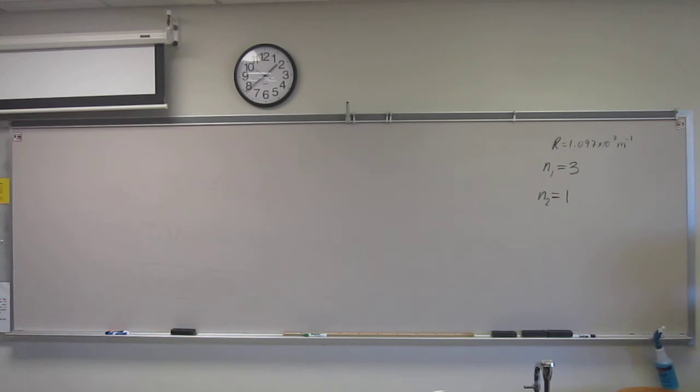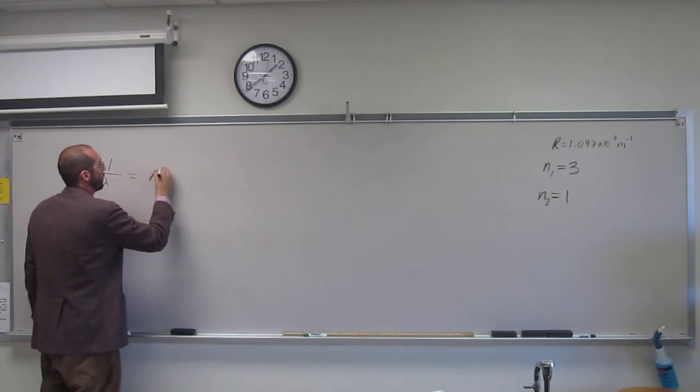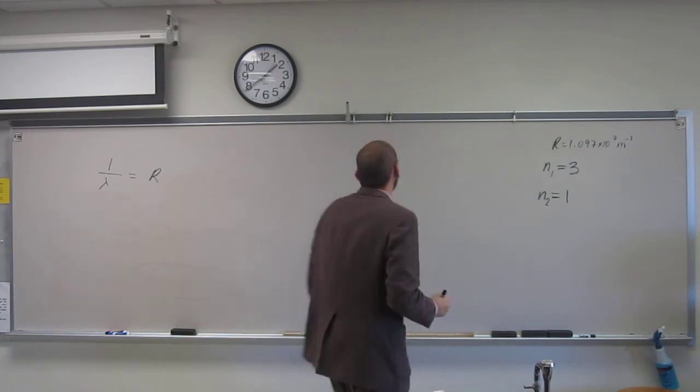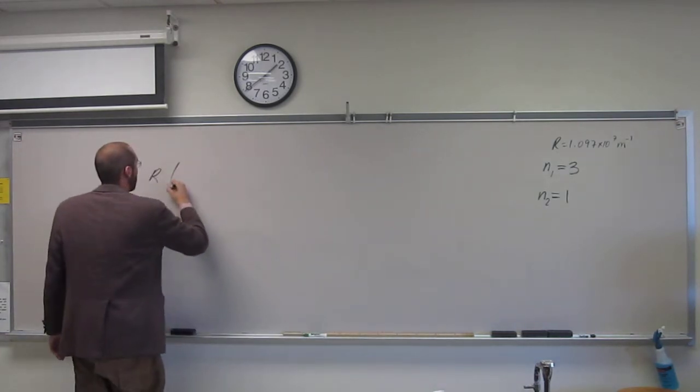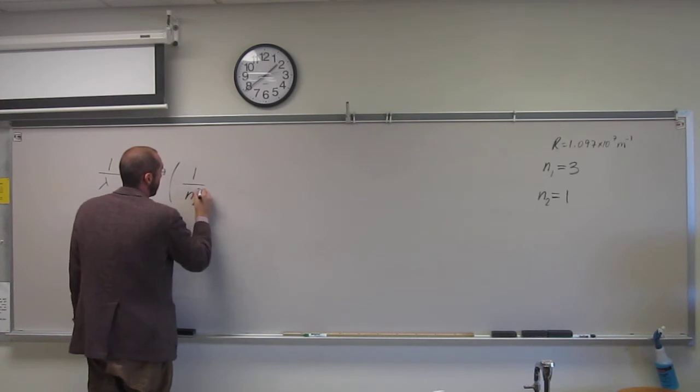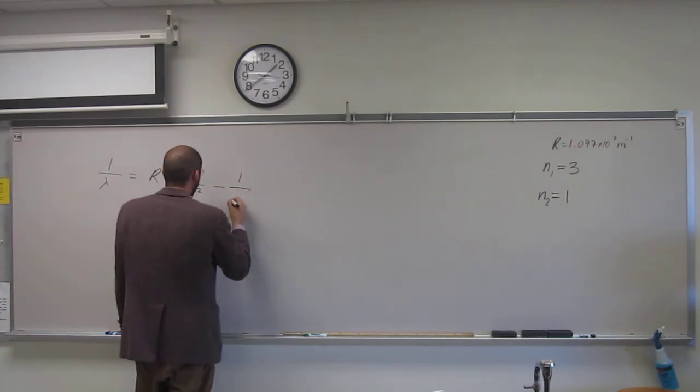So in order to do this, since it's the hydrogen atom, you've got to use the Rydberg equation. So the Rydberg equation is 1 divided by the wavelength equals the Rydberg constant, which has to be given to you, times 1 divided by n2 squared minus 1 divided by n1 squared.